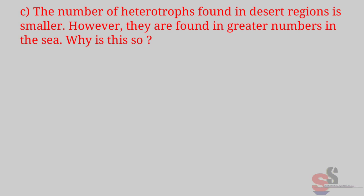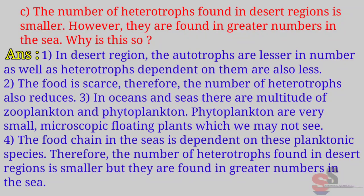C. The number of heterotrophs found in desert regions is smaller; however, they are found in greater numbers in the sea. Why? Answer: In desert regions, the autotrophs are lesser in number, and heterotrophs dependent on them are also less — food is scarce. In oceans and seas, there are multitudes of zooplankton and phytoplankton. Phytoplankton are very small microscopic floating plants. The food chain in the sea is dependent on these planktonic species; therefore, heterotrophs are found in greater numbers in the sea.